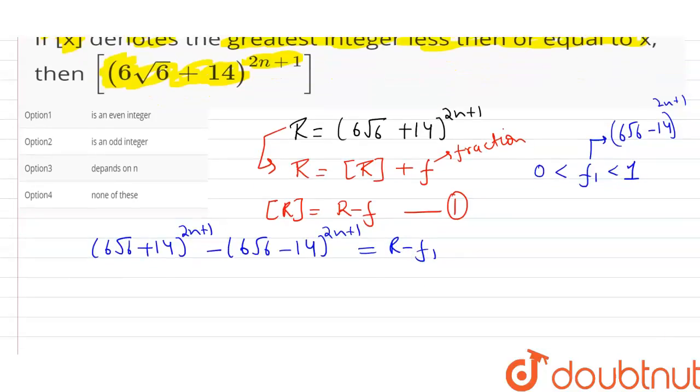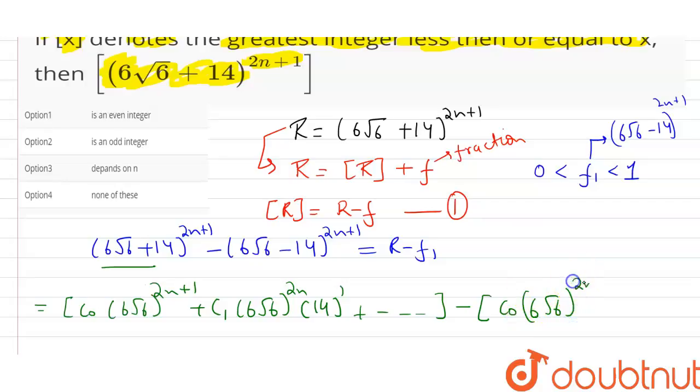Let us solve this. In the expansion of this term we have C₀(6√6)^(2n+1) + C₁(6√6)^(2n)(14) and so on, minus the expansion of C₀(6√6)^(2n+1) - C₁(6√6)^(2n)(14) and so on.